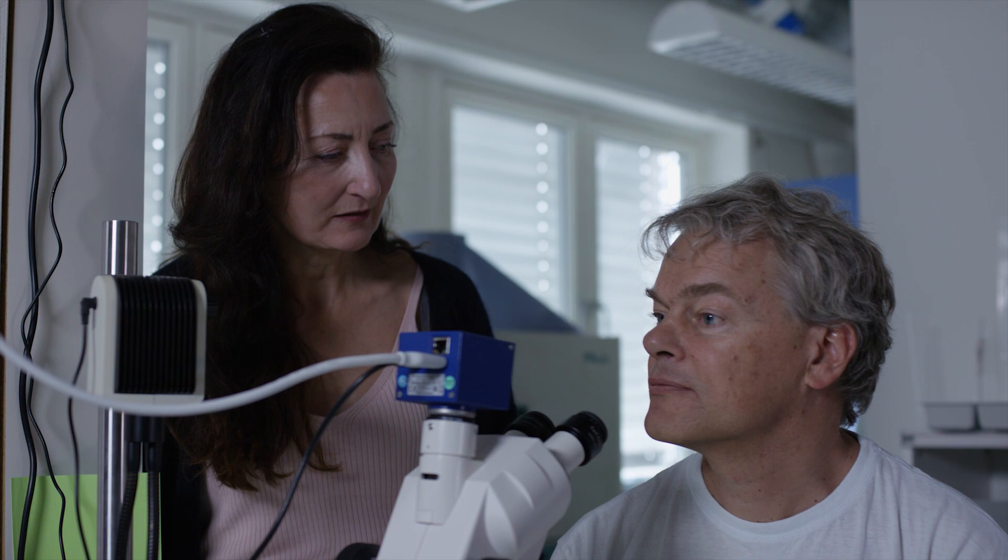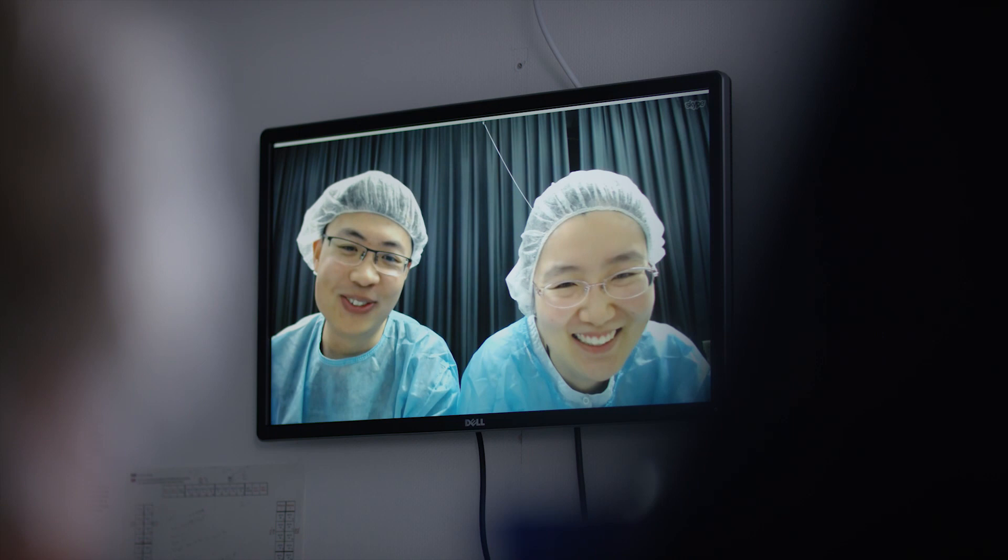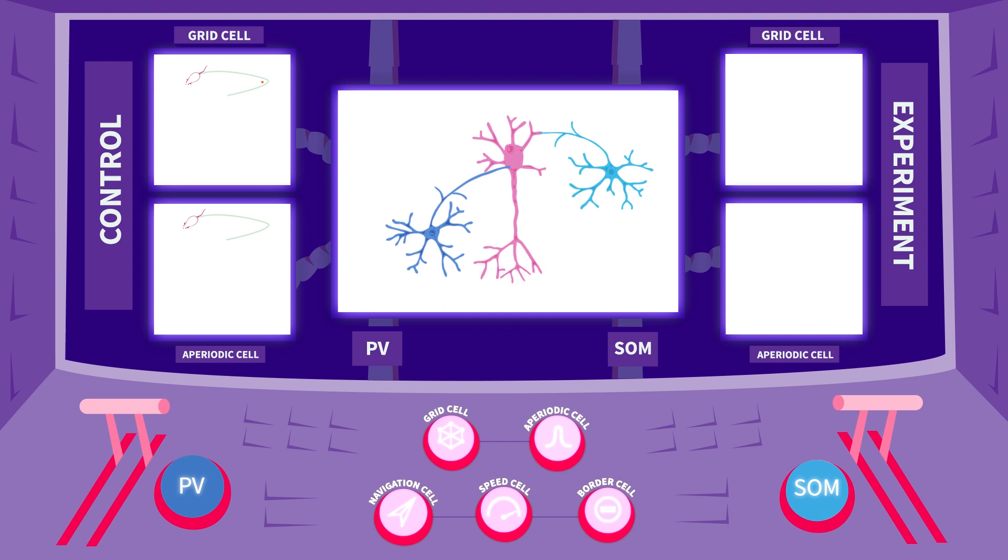A group of scientists at the Kavli Institute for Systems Neuroscience in Trondheim wanted to find out how PV and SOM interneurons control the circuit of spatial cells in the medial entorhinal cortex.